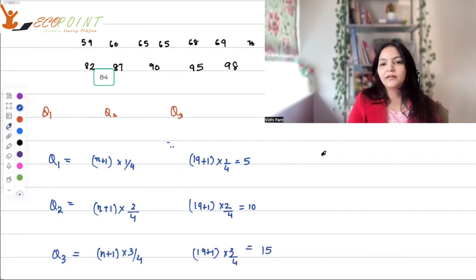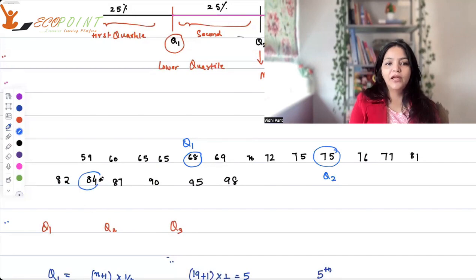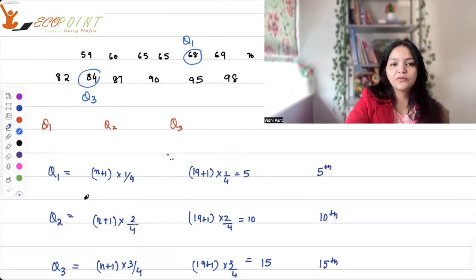19 plus 1 into 3/4, that gives you 15. So basically, fifth value in the data set is your first quartile. Tenth value in the data set is your second quartile or median. 15th value in this data set is your third quartile. So, fifth value in the data set 1, 2, 3, 4, 5, 68 is your first quartile or the lower quartile. 6, 7, 8, 9, 10, 75 is your median value or Q2. 76, 77, 81, 82, 84. 84 is your upper quartile Q3. That's how you can actually find out your quartiles.